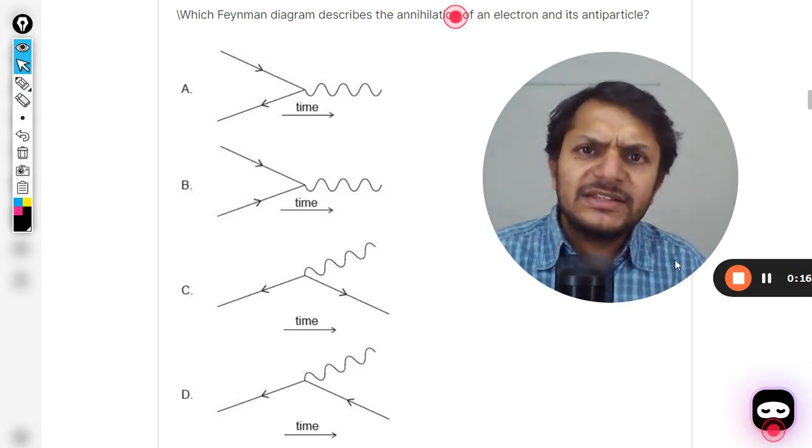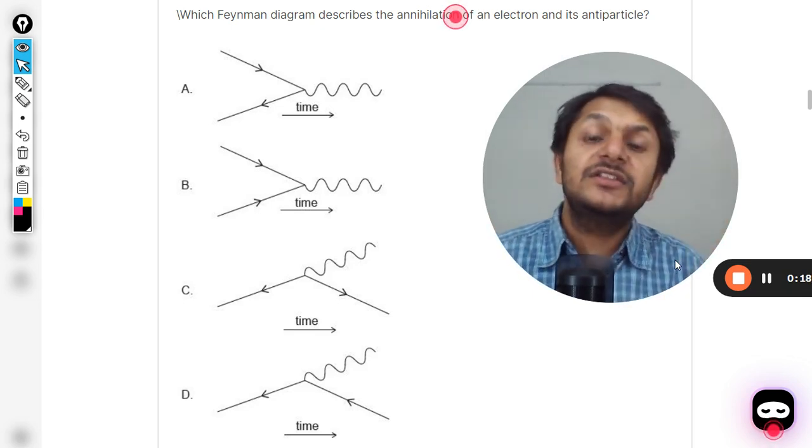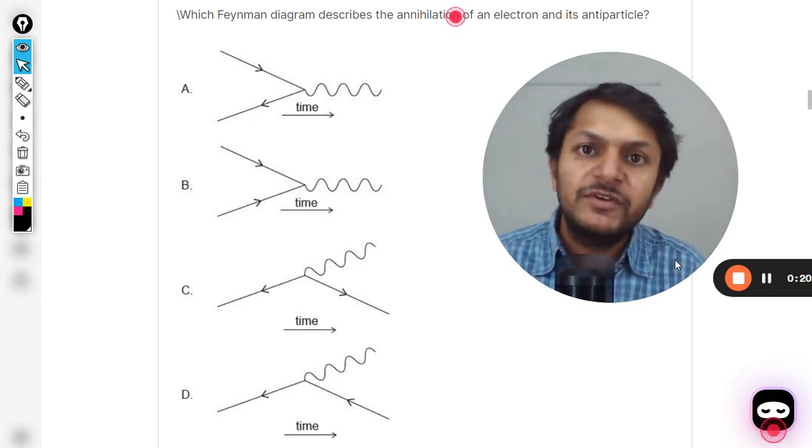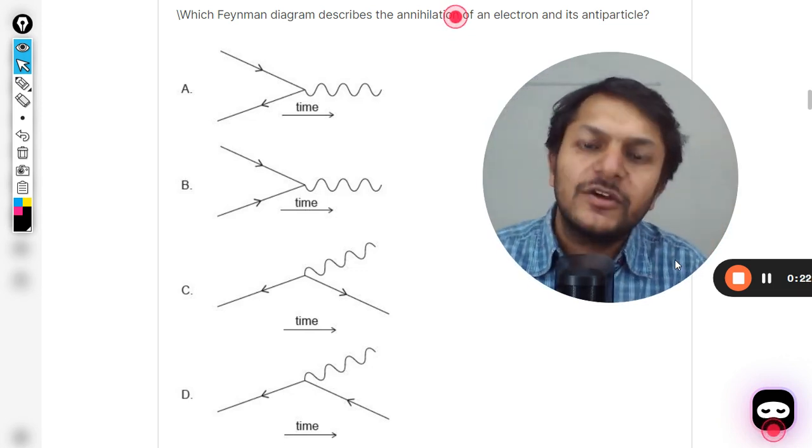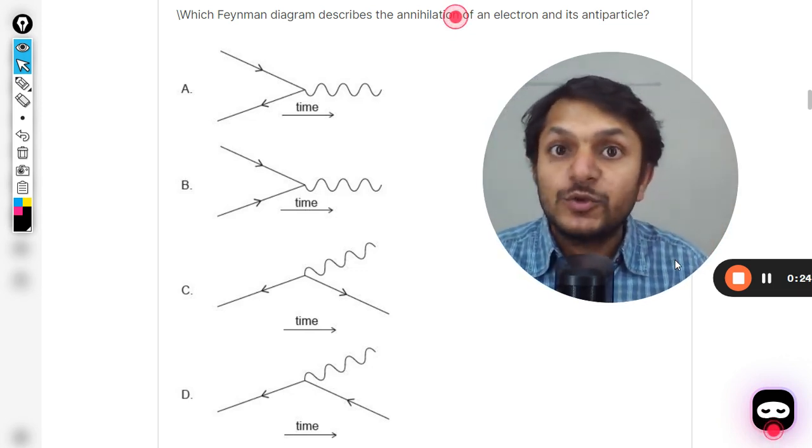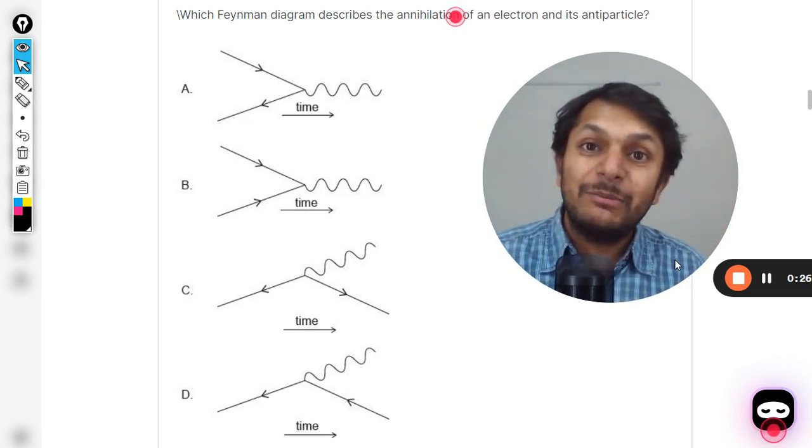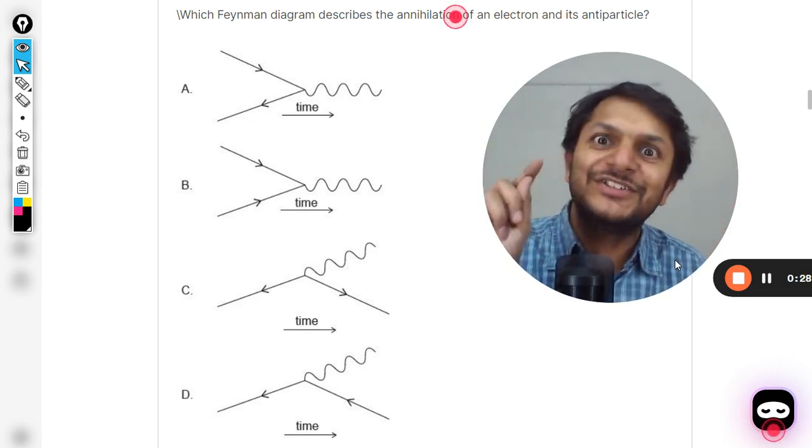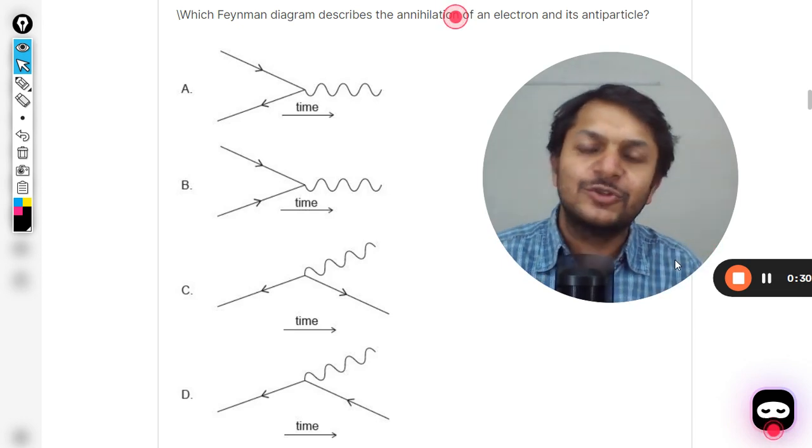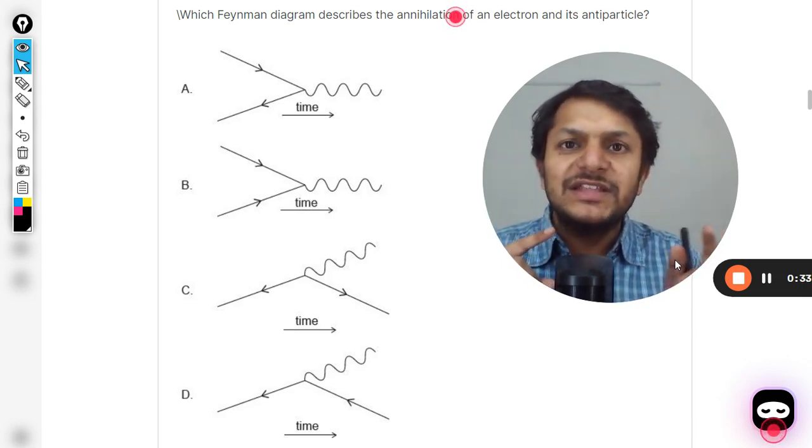And why is that? We have done this thing even in topic 5.1 when we were learning about the properties of charges. There was one property which was conservation of charge. If you remember, it is given in your books. So the conservation of charge means that charge cannot be created nor destroyed.